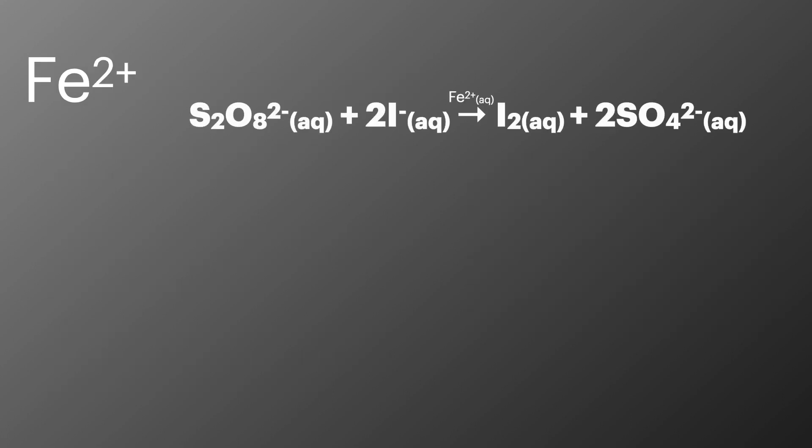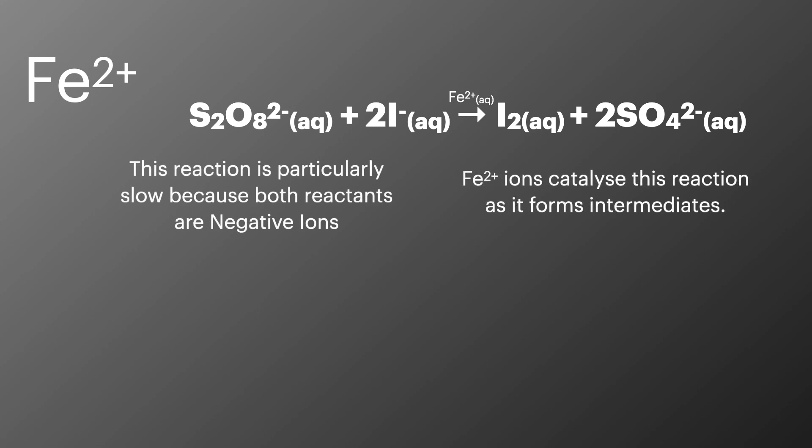Fe2+ ions catalyze the reaction between S2O8 2- ions and iodide ions. This reaction is particularly slow as it involves a reaction of two negative ions. Fe2+ helps to move the electrons through the reaction and creates a two step process.